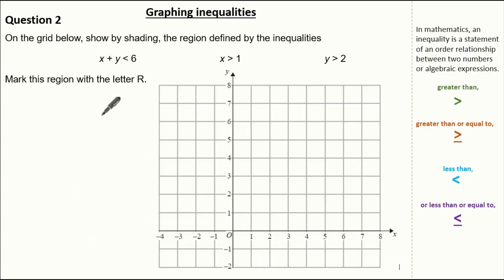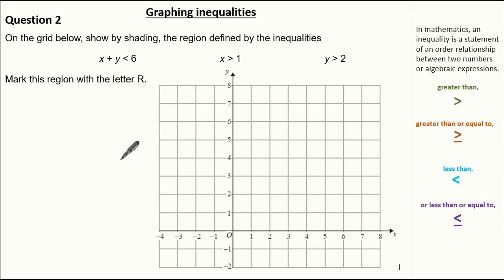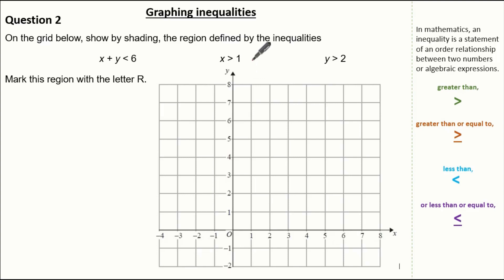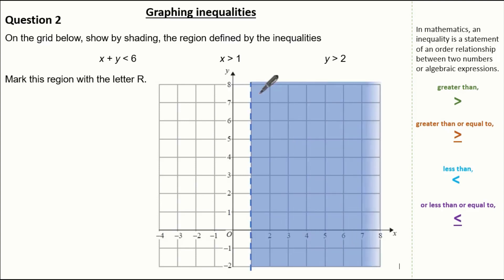Now let's have a look at a harder question. On the grid below, we need to show by shading the region defined by: x plus y must be less than 6, x must be greater than 1, and y must be greater than 2. We need to identify this region with the letter R. Starting with x greater than 1: we know it's a vertical dotted line, so I'm going to draw my dotted line where x is 1 and highlight the region of all x values which are greater than 1.